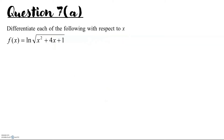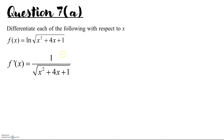Let's do question 7a — differentiate each of the following with respect to x. f(x) equals ln of the square root of (x squared plus 4x plus 1). To differentiate this function, the first step is to write the square root term as (x squared plus 4x plus 1) to the power of one half, so the function becomes 1 over (x squared plus 4x plus 1) to the power of one half. Then we differentiate this term.